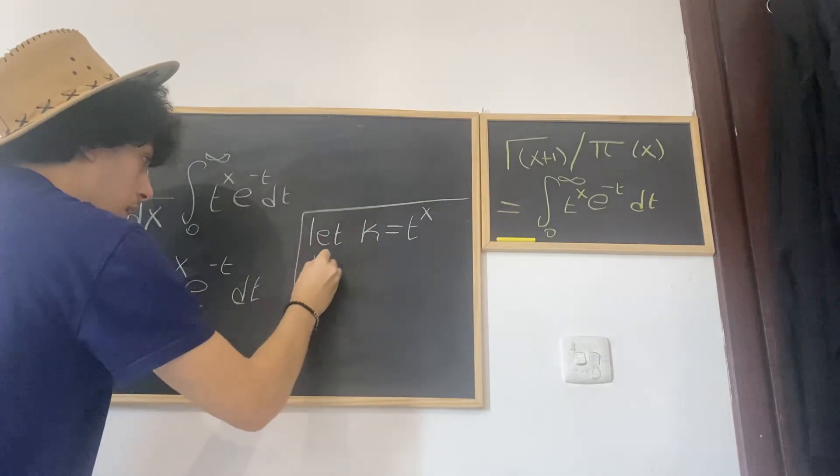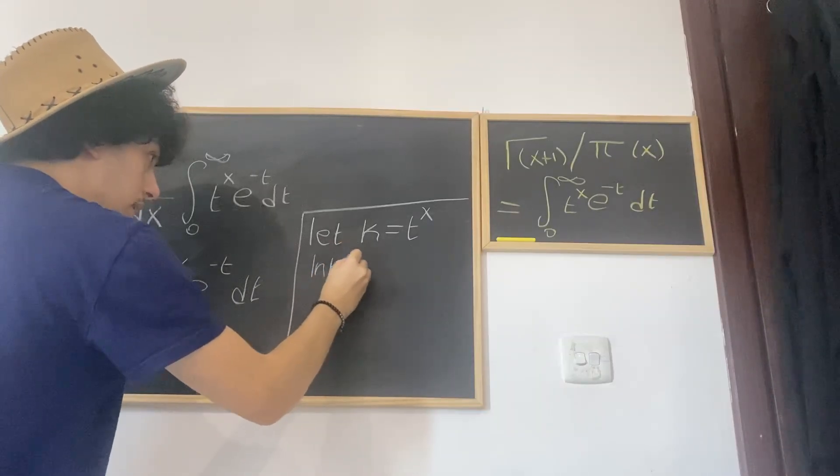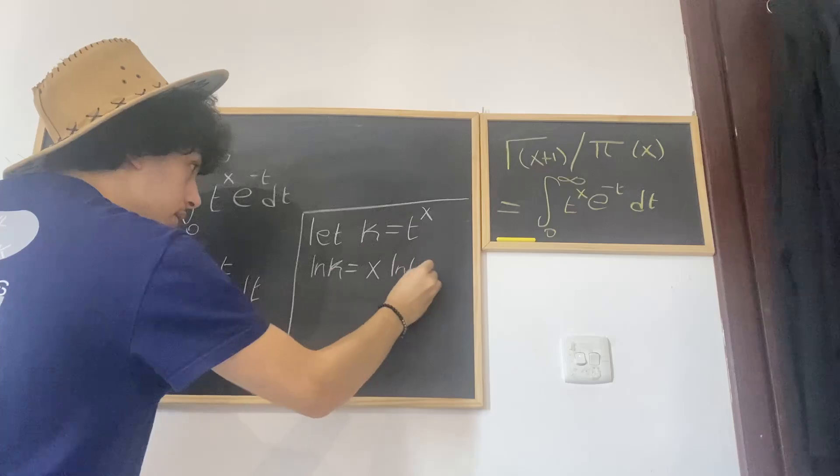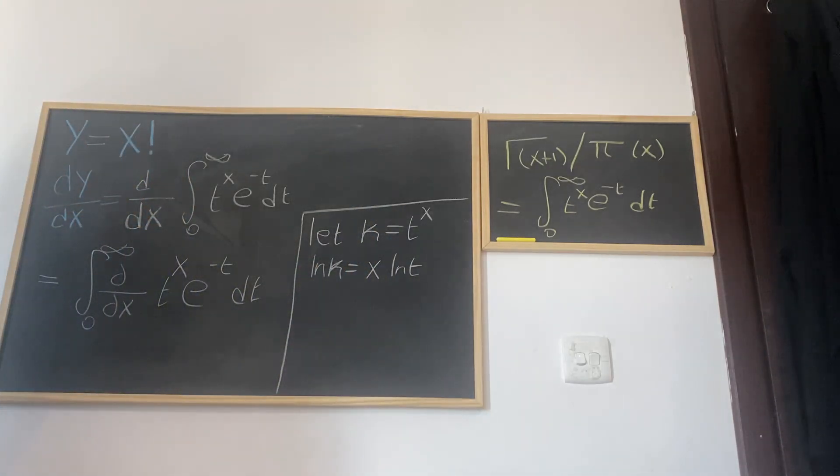Now what we want to do is differentiate both sides. So on the left hand side, the differentiation of this is just dk/k.